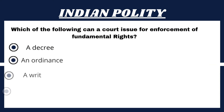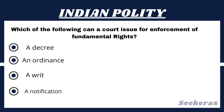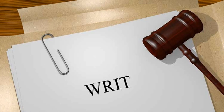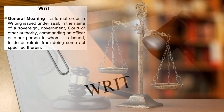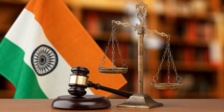Question number 8. Which of the following can a court issue for enforcement of fundamental rights? Option 1, A decree; Option 2, An ordinance; Option 3, A writ; or Option 4, A notification. The answer is Option 3, A writ. A writ is a formal written order issued by any body — executive or judicial — authorized to do so. In modern times, this body is generally judicial; therefore, a writ is a formal written order issued by a court having authority to issue such an order.